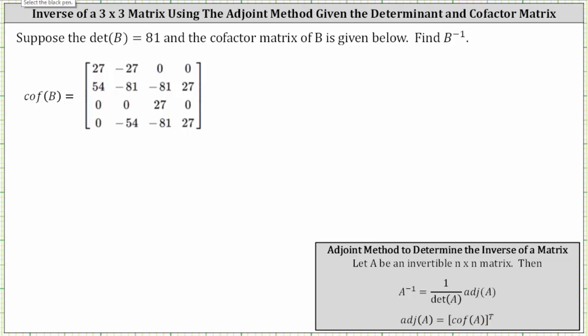From the given information, we know the determinant of matrix B is equal to 81, and we are given the cofactor matrix. This means we'll have to transpose the cofactor matrix to determine the required adjoint of matrix B. So the adjoint of B is equal to the transpose of the cofactor matrix.